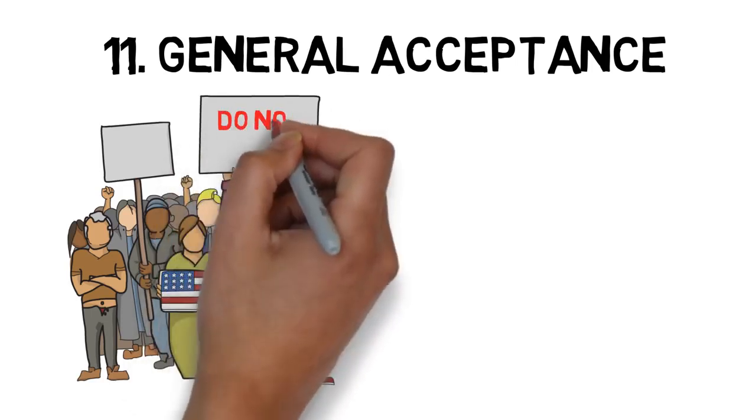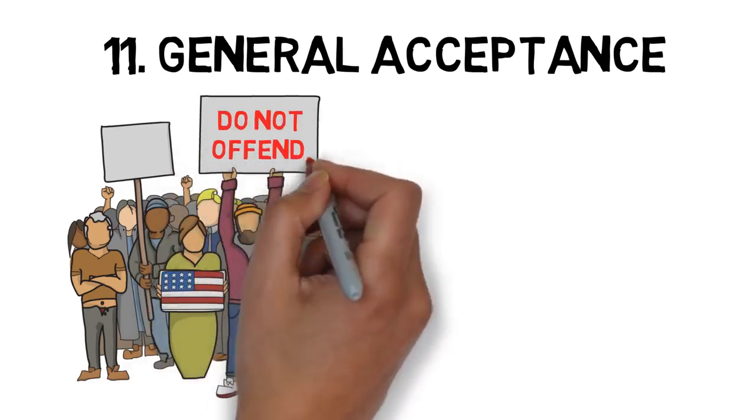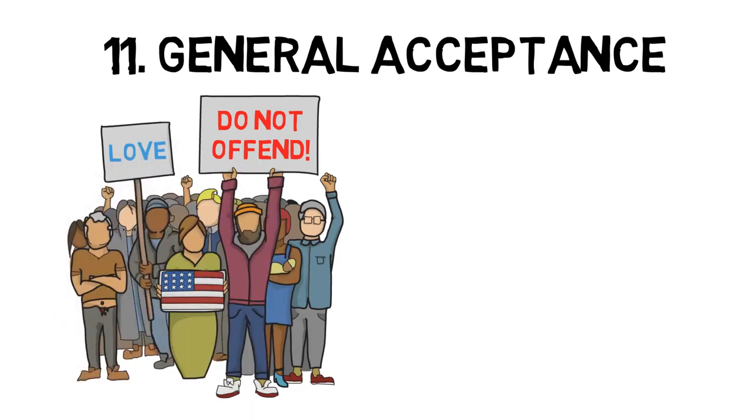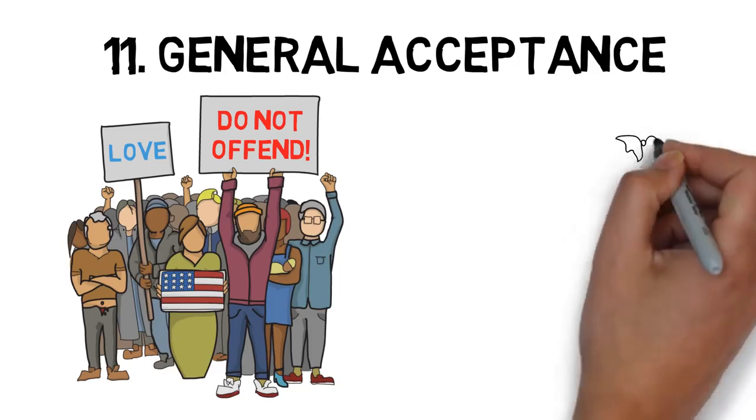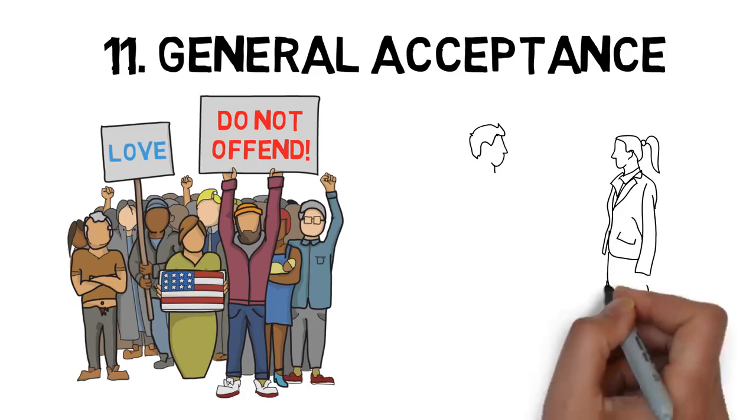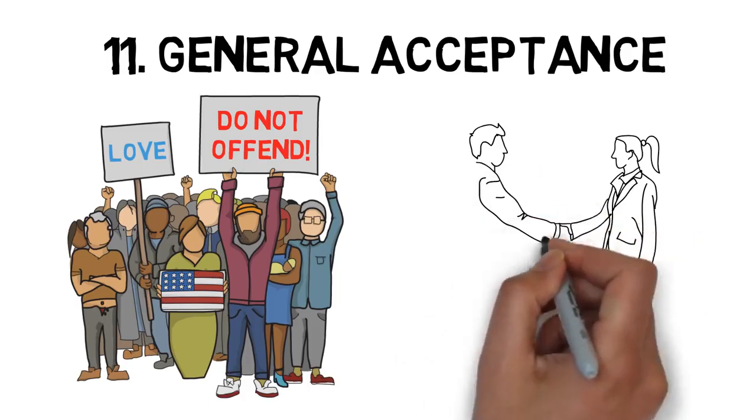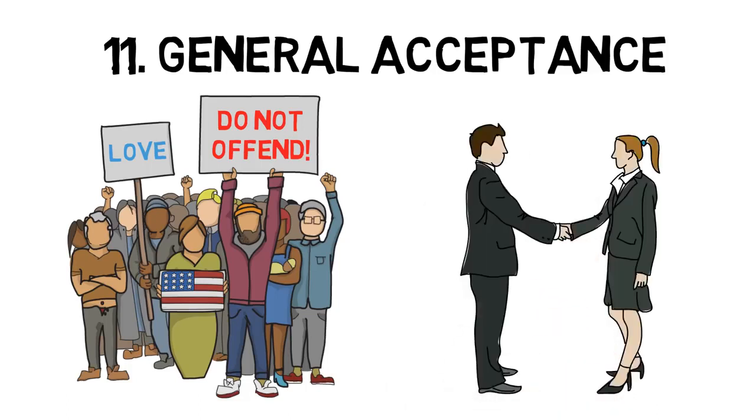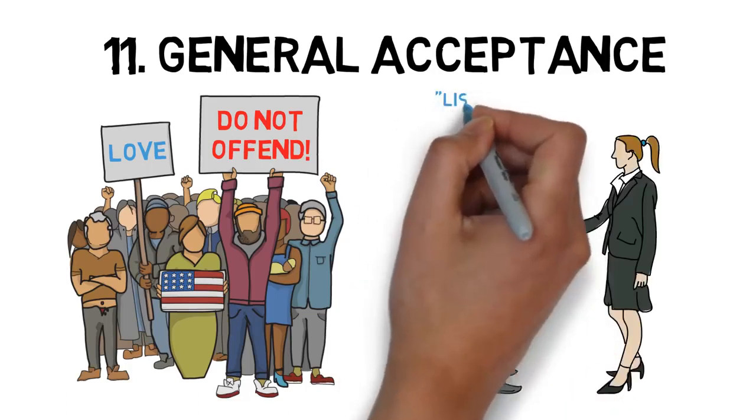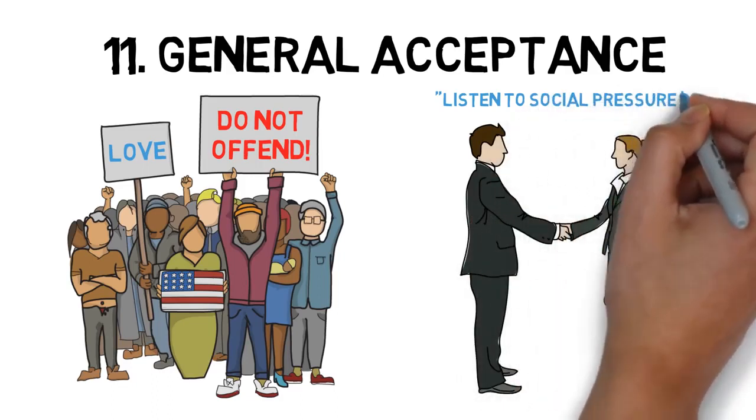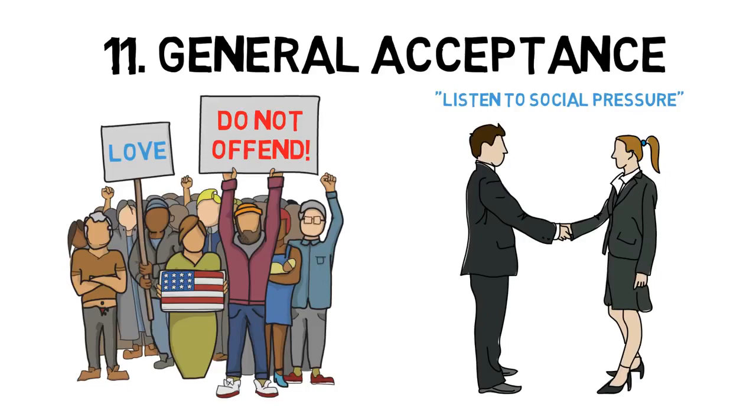Now, the purpose of this video is not to convince you one way or another on this issue. It's simply a demonstration of how powerful general acceptance can be. So how can you use the power of general acceptance? Well, it's actually pretty simple. Let's say that you're having a disagreement with someone and they're being very frustrating, so you want to win this argument quickly. All you have to do is bend their argument so that it goes against a current social norm. It's very easy and very effective.